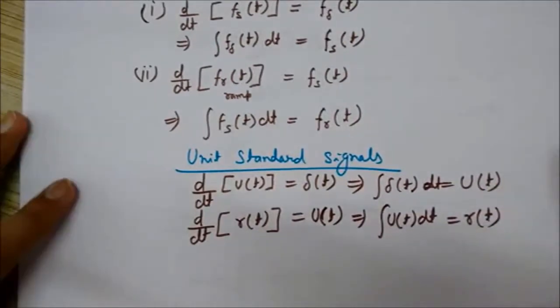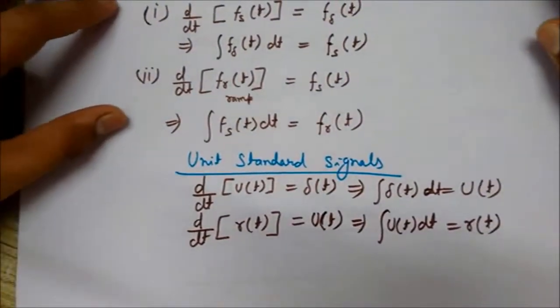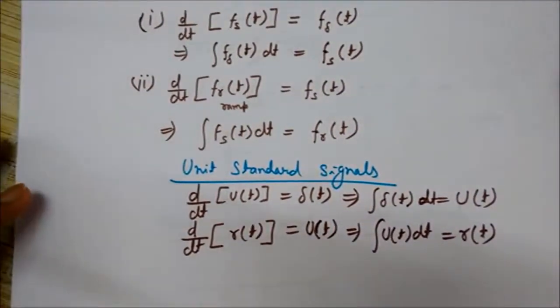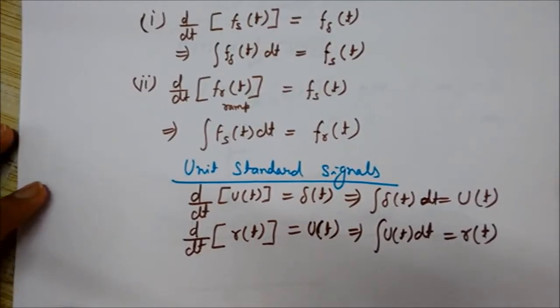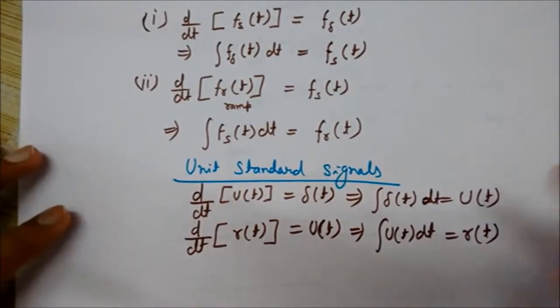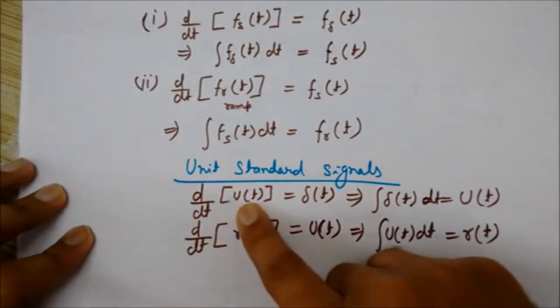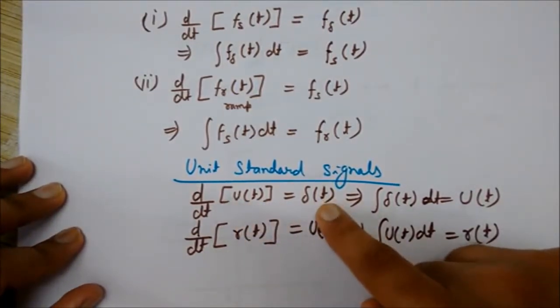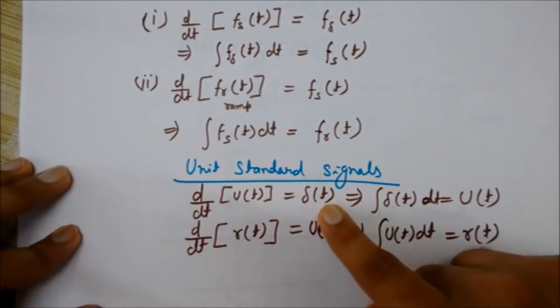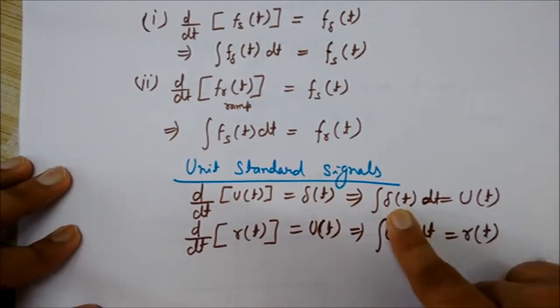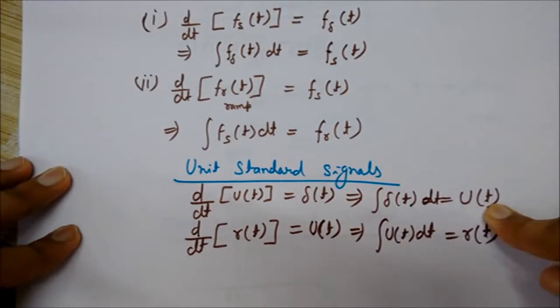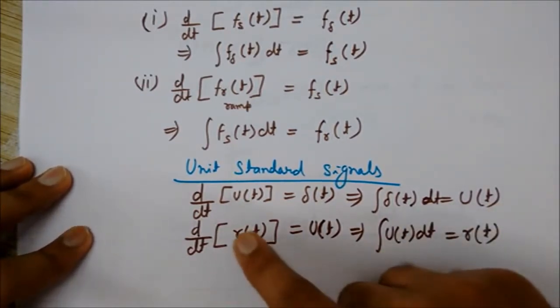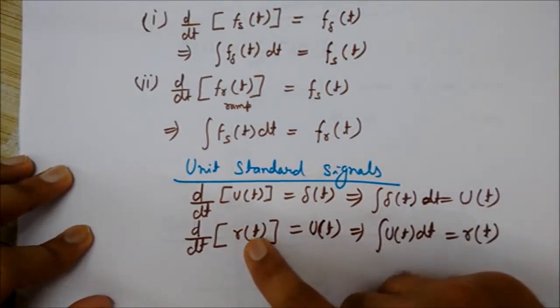These similar results can be obtained for the unit cases of the signals. So differentiation of unit step signal gives you the impulse signal, and integration of impulse signal gives you the unit step signal. Similarly, ramp signal's differentiation with respect to time will give you the unit ramp signal.